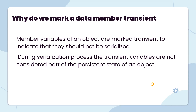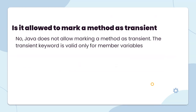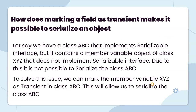If you want to store a password and save it in a database, you would mark it transient to exclude it from the persistent state. Is it allowed to mark a method as transient? No. Java does not allow marking a method as transient. The transient keyword is valid only for member variables.